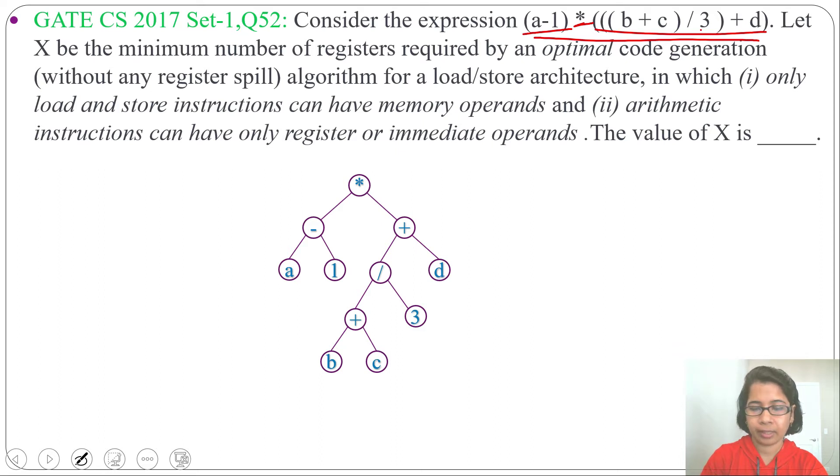Next, we need to add level. For leaf, level will be 1. Just add level 1 for every leaf. I am skipping adding level for 1 and 3 as we can do arithmetic operation with immediate operand. For 1 and 3, we don't need any register. That's why I am skipping adding level. Next, we will do for interior node. Here, both child have level 1. So for plus node, level will be 1 plus 1, 2.